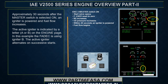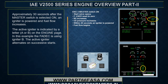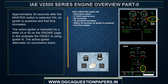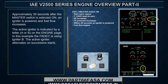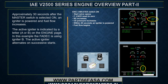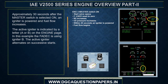Approximately 30 seconds after the master switch is selected on, an igniter is powered and fuel flow increases. The active igniter is indicated by a letter A or B on the engine page. In this example, the FADEC is using igniter B. The active igniter alternates on successive starts.